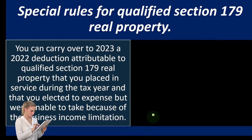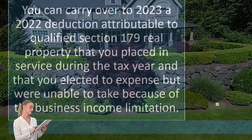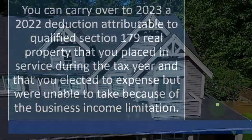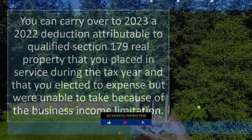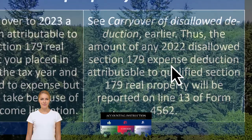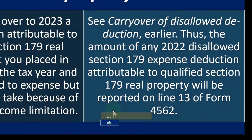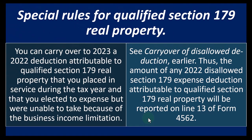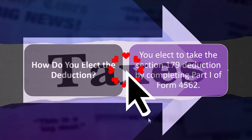For qualified Section 179 real property, you can carry over to 2023 a 2022 deduction attributable to qualified Section 179 real property placed in service during the tax year that you elected to expense but were unable to take because of the business income limitation. The amount of any 2022 disallowed Section 179 expense deduction attributable to qualified Section 179 real property will be reported on line 13 of Form 4562.